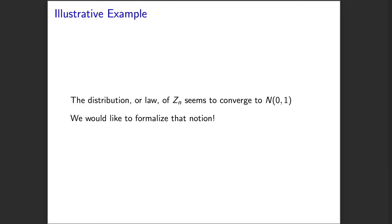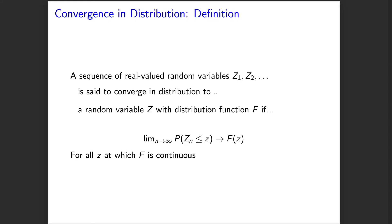As noted, the distribution or the law of the sequence of random variables really seems to converge to a standard Gaussian, but we would like to formalize what that means. Toward that end, we're going to give the formal definition of convergence in distribution.